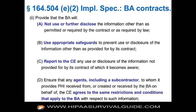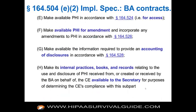These requirements now also apply to subcontractors of business associates. The BA will ensure that any agents, including subcontractors, to whom it provides PHI received from or created by the BA on behalf of the CE agree to the same restrictions and conditions that apply to the BA. The omnibus rule made that clear: the requirements that a covered entity puts in the contract with its direct business associates must cascade down to all subsequent subcontractors.